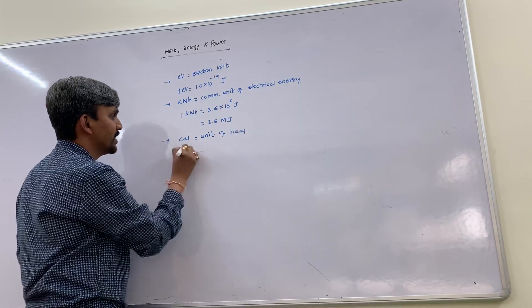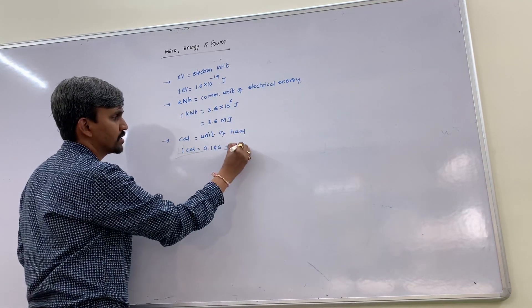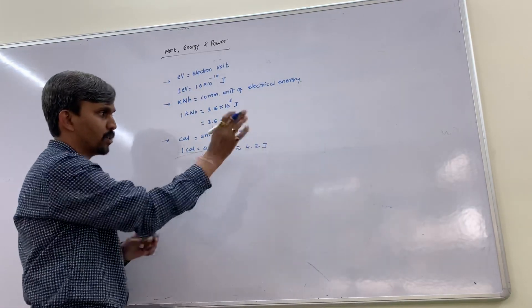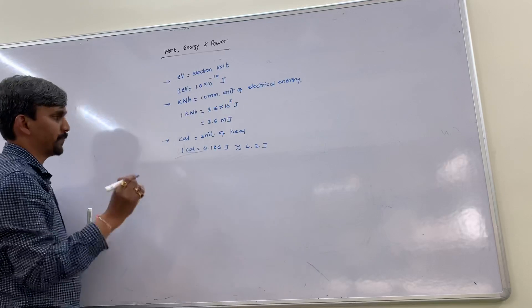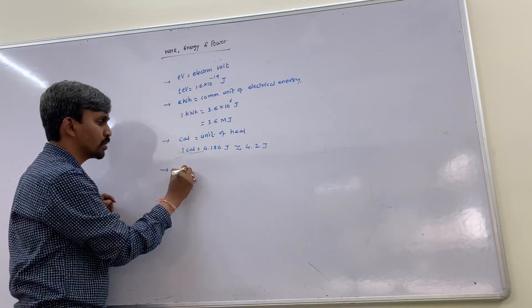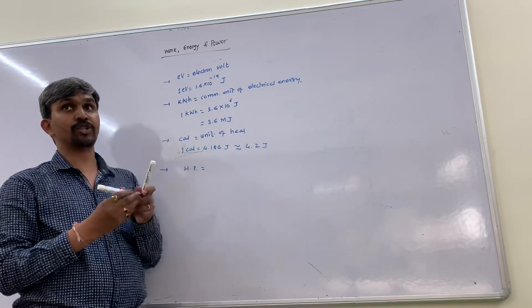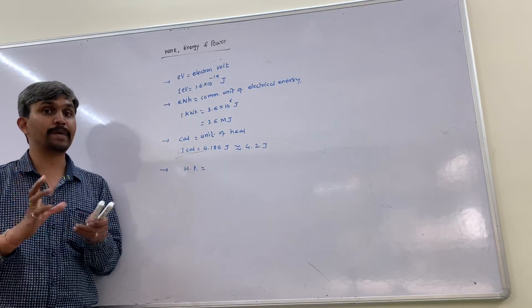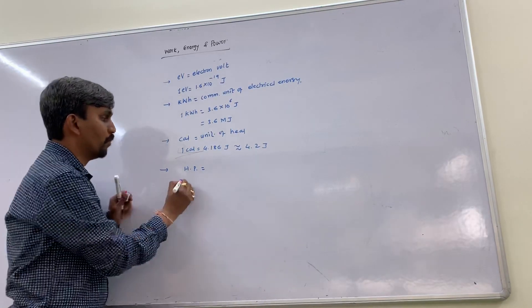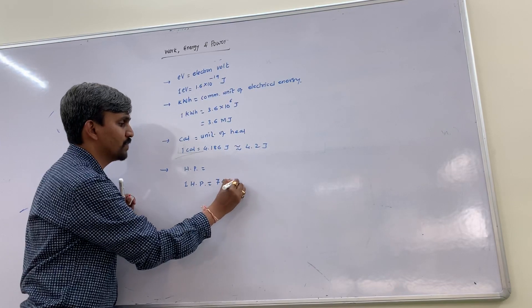One calorie is the unit of heat. One calorie equals 4.186 joules, which is approximately 4.2 joules. Another unit of power is horsepower, generally used for machines, engines, and pumps. One horsepower equals 746 watts.